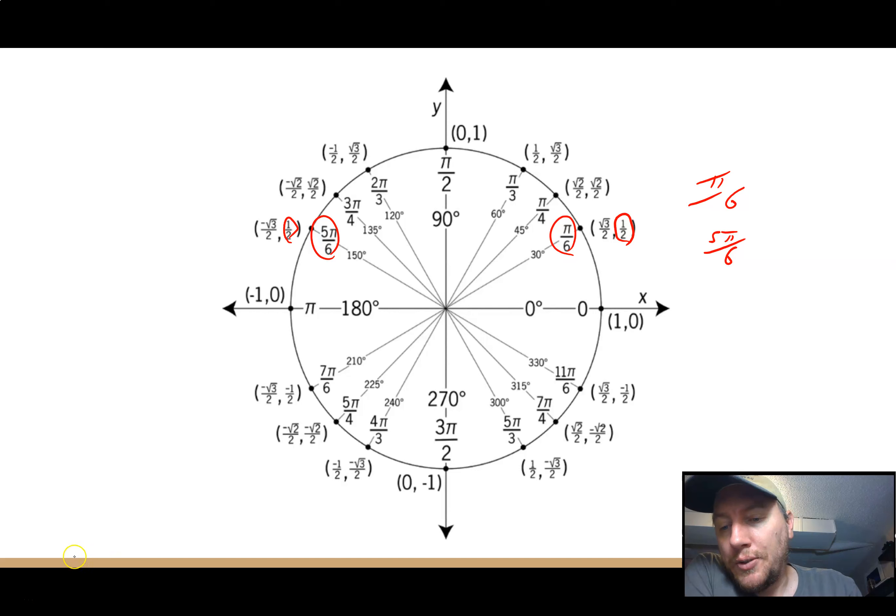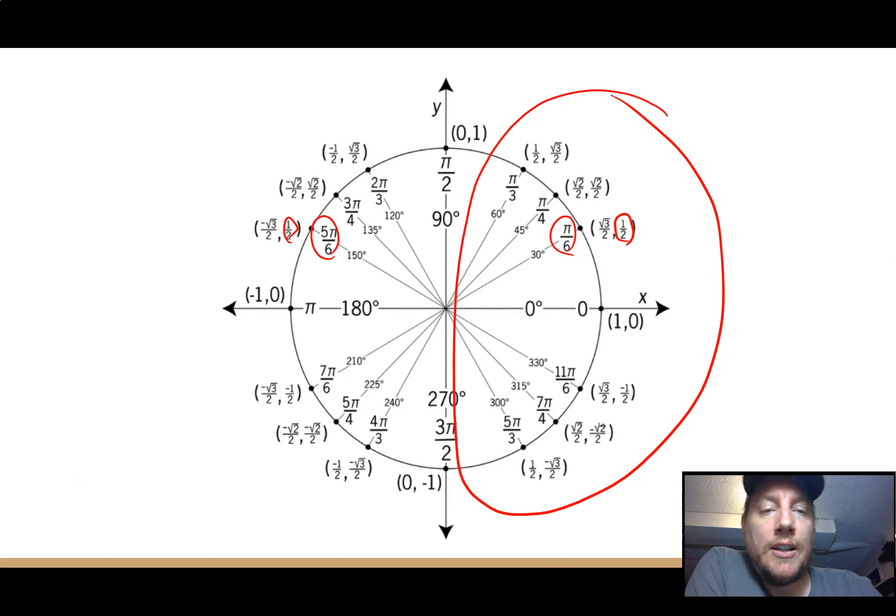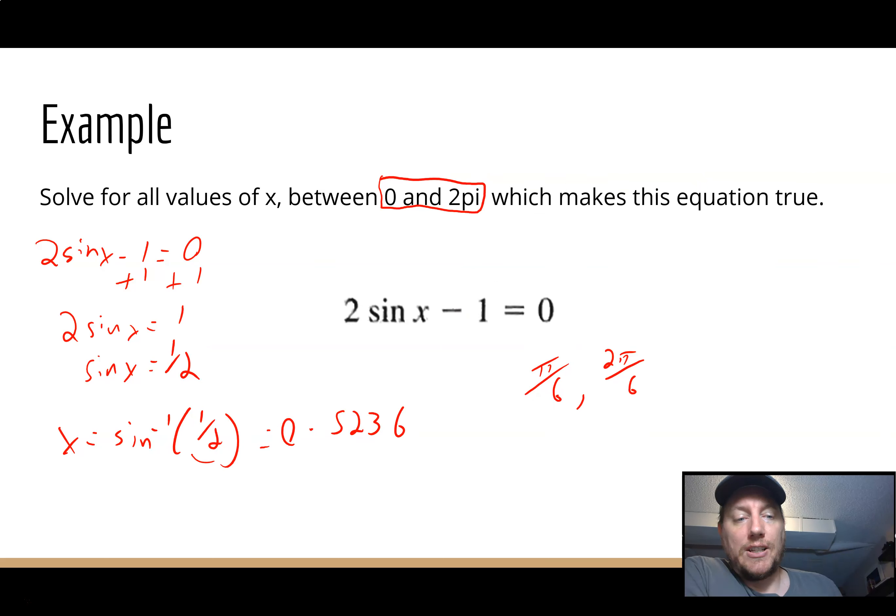Remember that when you're doing inverse functions, it is going to restrict your range, and inverse sine is only going to give us stuff over here. And so that's always going to produce one of your answers. The other answer is going to be on the other side somewhere. And it's not always 100% predictable how to find it. So yeah, let's try another one.